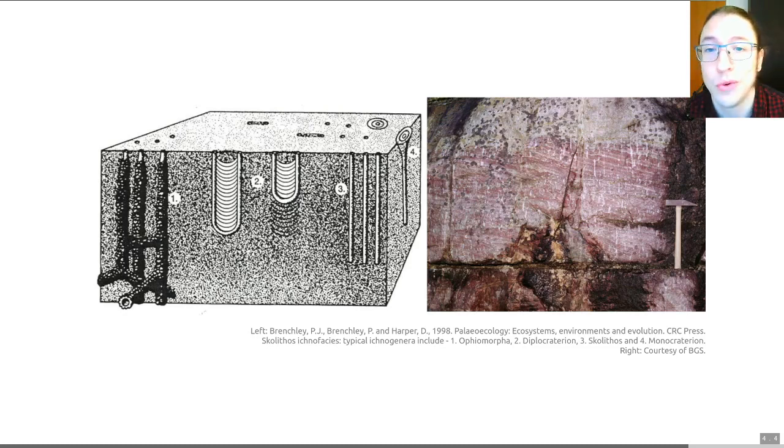A really famous example of the Scolithus facies is the pipe rock from the Cambrian in the northwestern Highlands, as well as Silurian strata in the west of Ireland and southern Norway. You see an example of pipe rock here. It's called pipe rock because some of these burrows look an awful lot like pipes. These burrows in the pipe rock are Scolithus burrows themselves, after which this ichnofacies is named. It's quite a familiar rock if you do field work in northwestern Scotland, which I do a lot of.